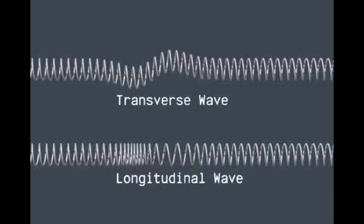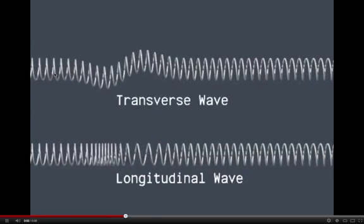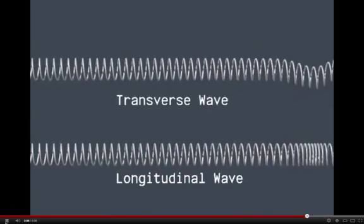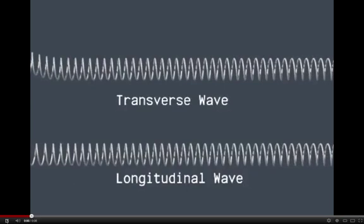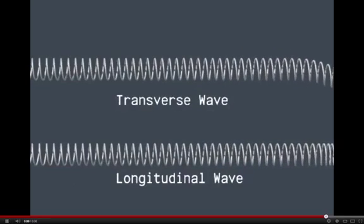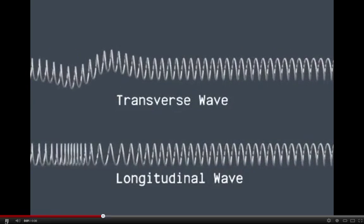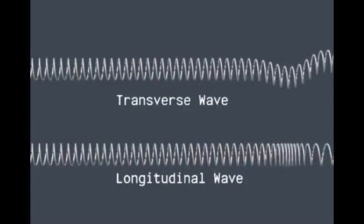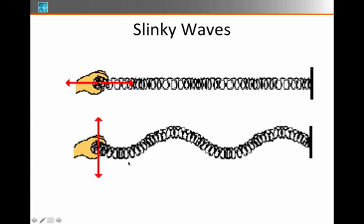Notice what's happening to the transverse wave — the jiggle that's going up and down travels down the length of the entire spring. Notice what's happening to the longitudinal wave — it's the compression that's traveling. The slinky then can help us visualize the difference between a longitudinal and a transverse wave. Of course there are many examples on different media — we're just using it as a way of illustrating it for now. We'll be looking at transverse and longitudinal waves throughout the rest of this course.